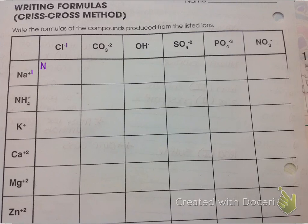Now remember, if there's no number, that means the charge is a 1. And so what this is saying is we have a sodium that has a plus 1 charge and a chloride which has a minus 1 charge, and we're going to combine them.